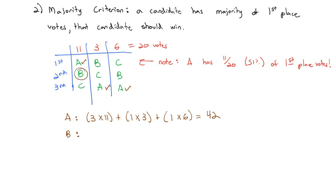B is in second place, which is worth 2 points times the 11 votes, plus a first place, which is 3 points times the 3 votes, plus a second place, which is 2 points times the 6 votes. Adding all that up, 43 points for B.